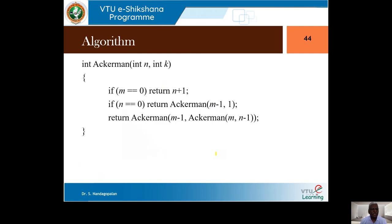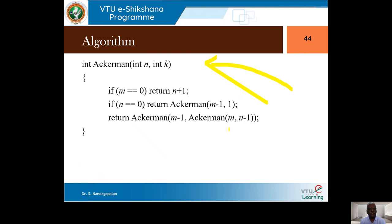We can easily translate this into an algorithm. If m equals 0, return n+1. If n equals 0, it's a recursive call reducing m: return A(m-1, 1). Otherwise, return A(m-1, A(m, n-1)). I leave it to viewers to write a recursive tree as we did earlier.